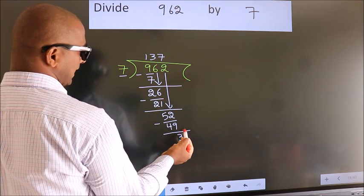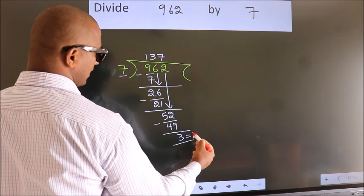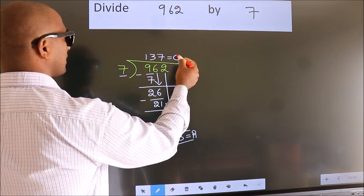No more numbers to bring down. So, we stop here. This is our remainder. This is our quotient.